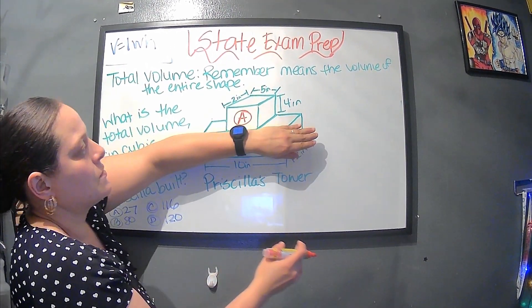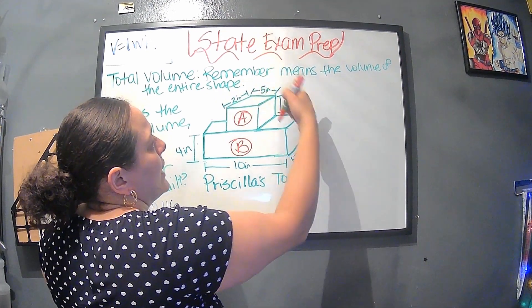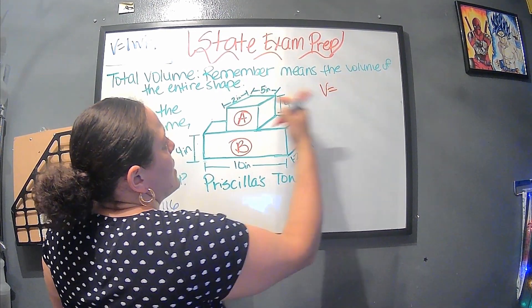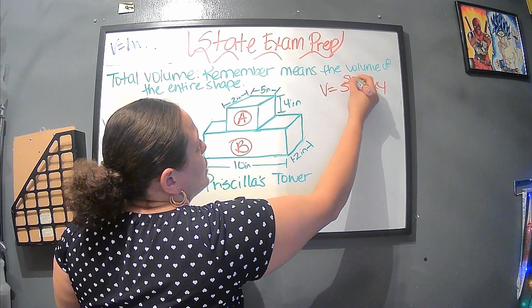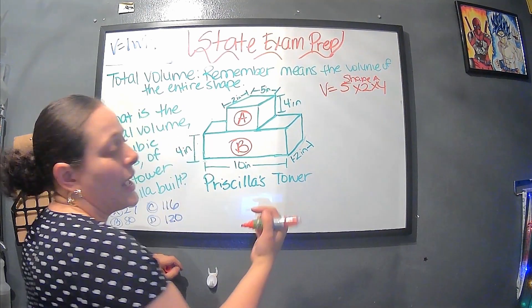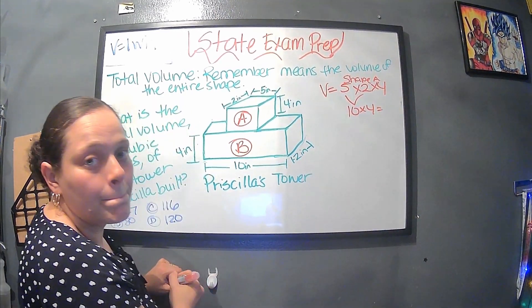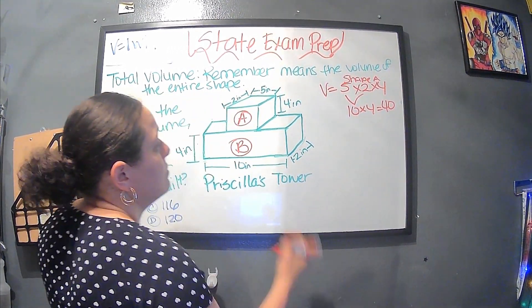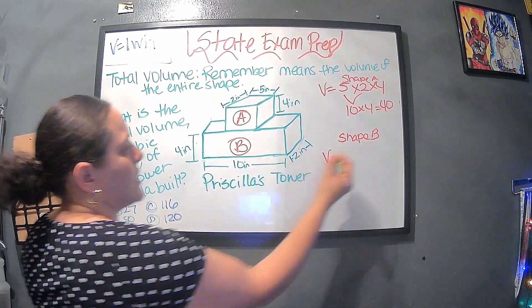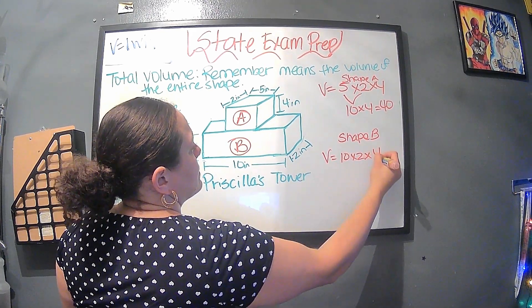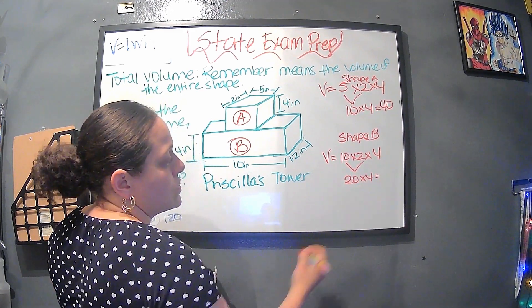I like to label things because it makes it easier. So if I have this as shape A and shape B, the best way that I like to teach it and explain this is that we separate these two boxes. Let's say we didn't have this piece. If we had to find the volume of that, it would be five times two times four. And then we can label it as shape A. Let's see what that equals. Five times two is 10 times four equals 40. Now, the volume for shape B, we have 10 times two times four. 10 times two is 20 times four equals 80.